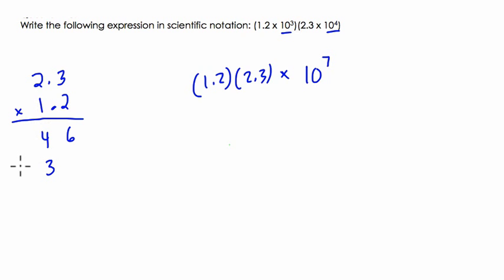1 times 3 is 3, and 1 times 2 is 2. Now, we add these parts up. 2, 7, 6. Where does the decimal go?